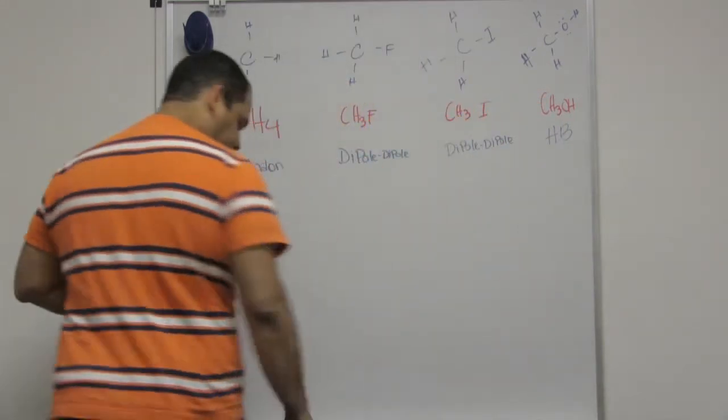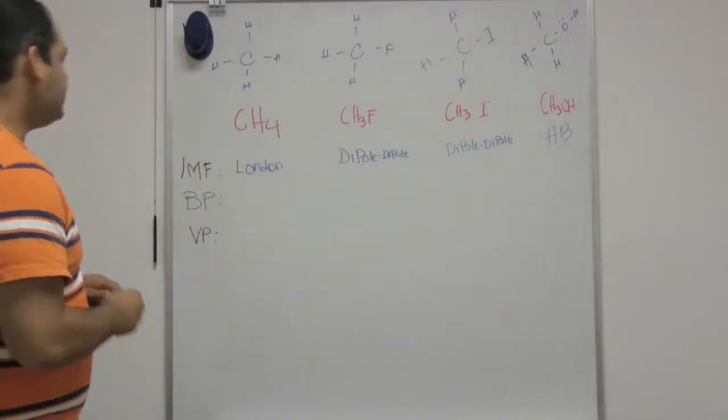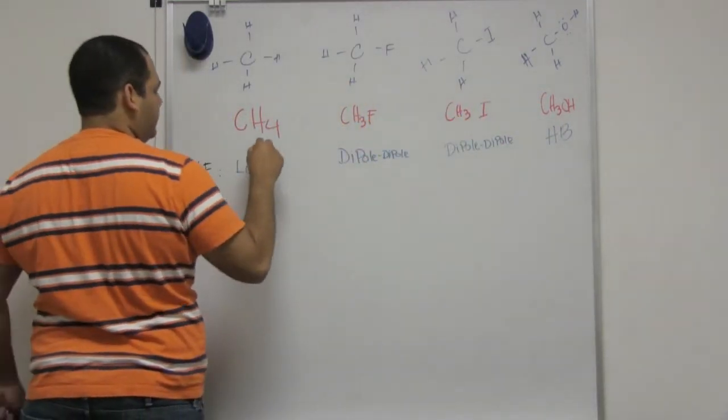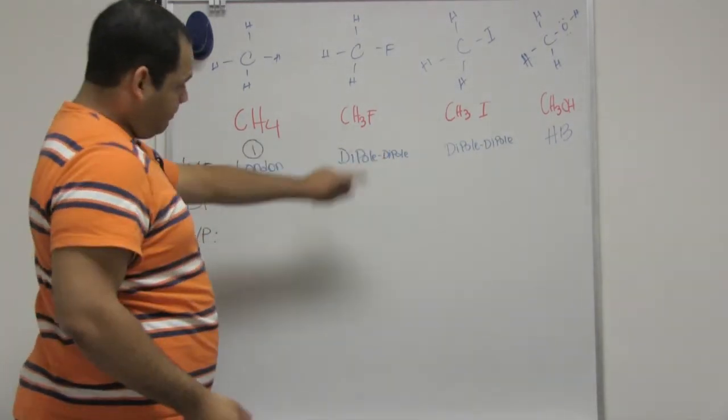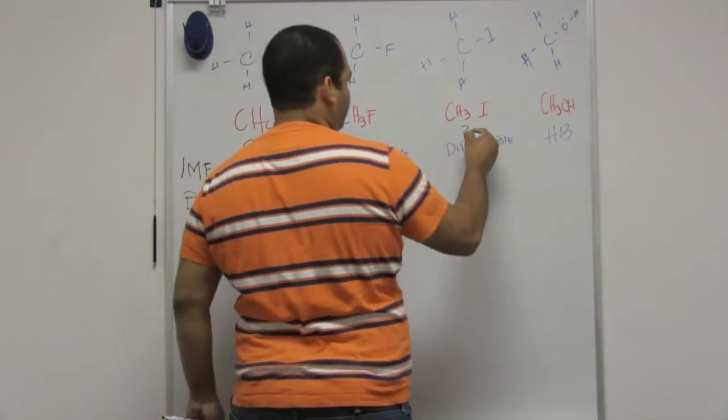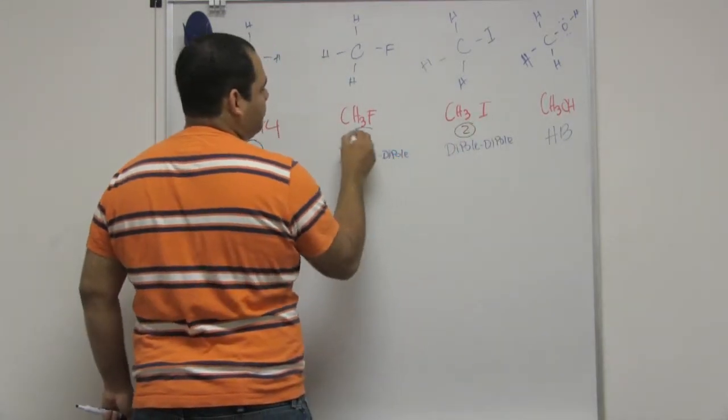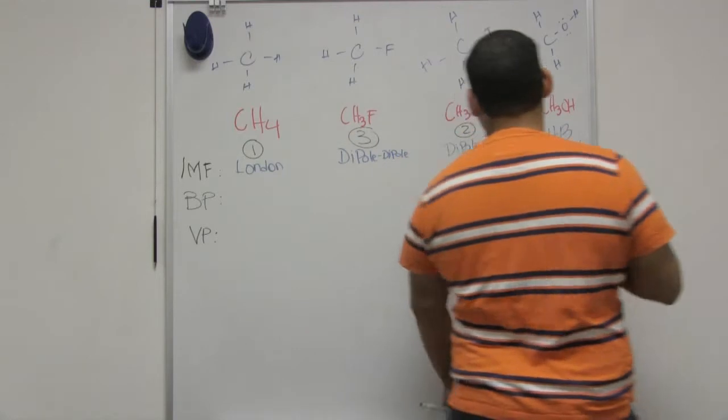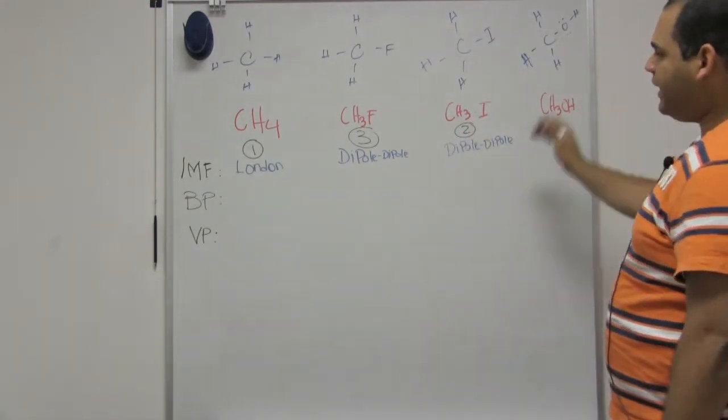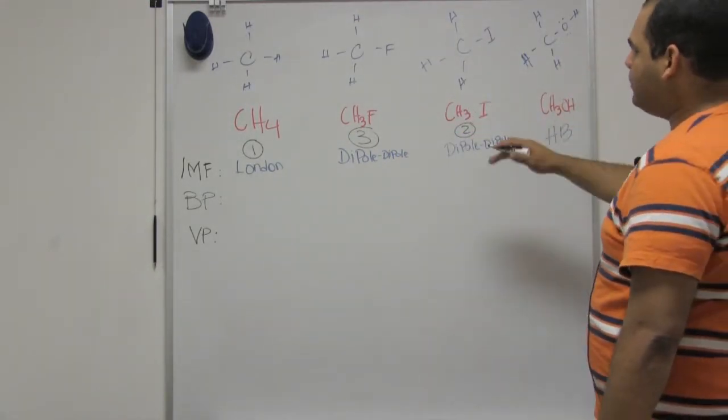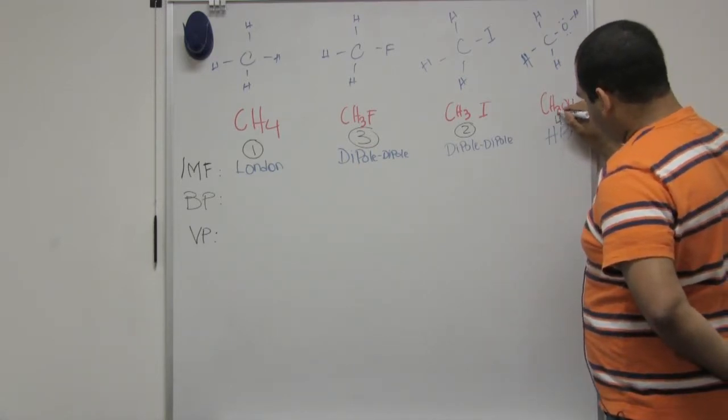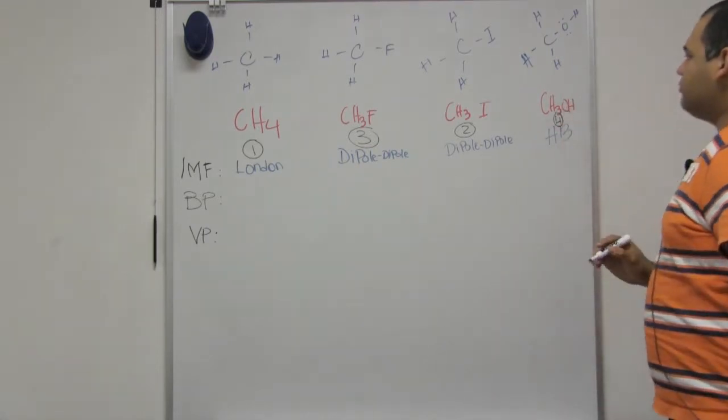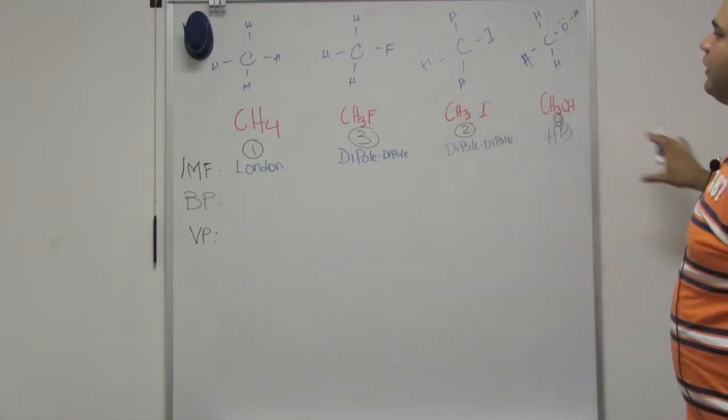So, if I'm assigning here, I would say that this is the weakest, so number one. Then, I have two dipole-dipoles, but this dipole is stronger than this one because the fluorine is more electronegative. It makes a stronger dipole. And hydrogen bond is the strongest from all the intermolecular forces.